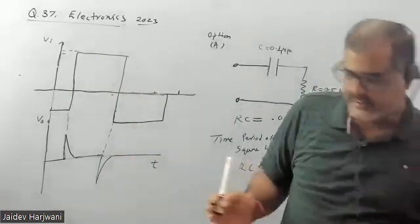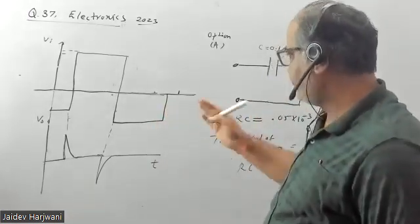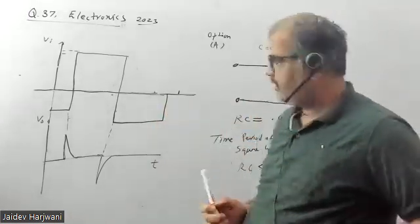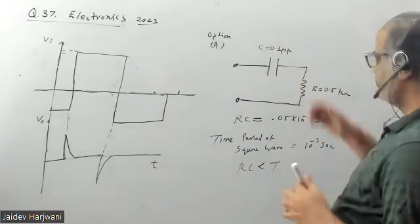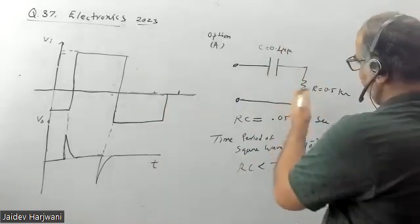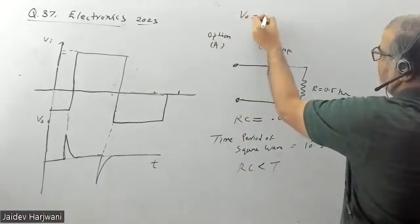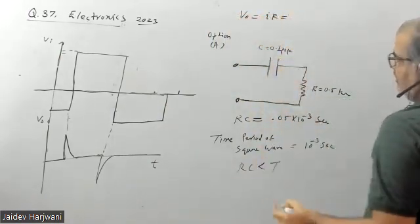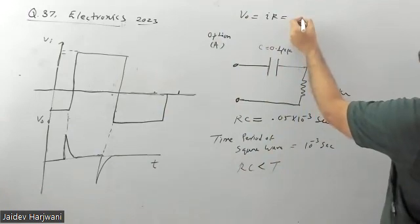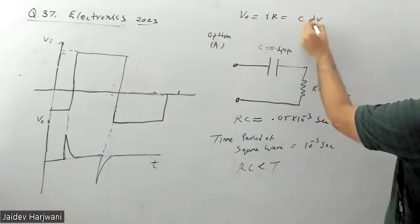Basically this is the characteristic of a differentiator circuit. Whenever you want to have the output, your output will be basically IR, and I will be in the circuit C dV/dt. Which is RC dV/dt.